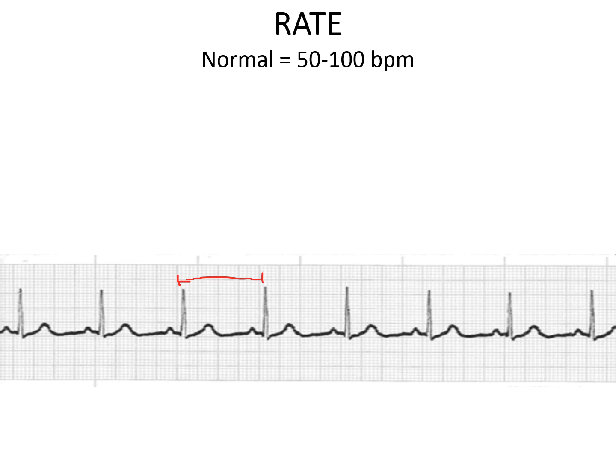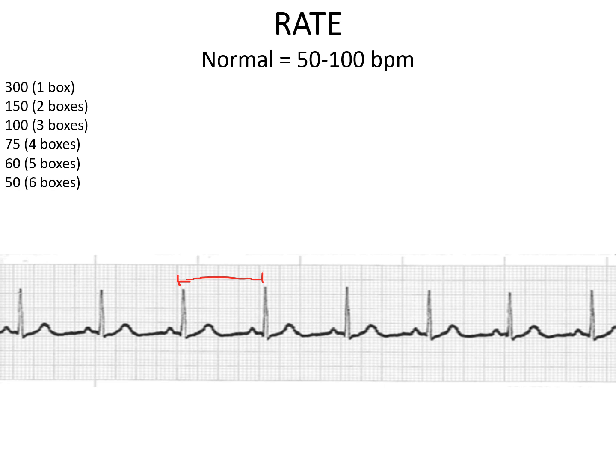Normal rate is 60 to 100 beats per minute. The rate can be counted by the square counting method, which involves counting the number of big boxes between the R waves using the following sequence: 1 box = 300 bpm, 2 boxes = 150 bpm, 3 boxes = 100 bpm, 4 boxes = 75 bpm, 5 boxes = 60 bpm, 6 boxes = 50 beats per minute.